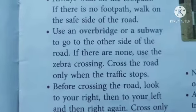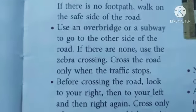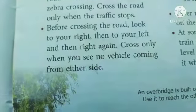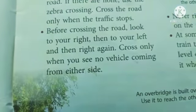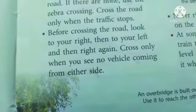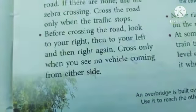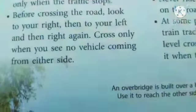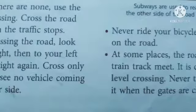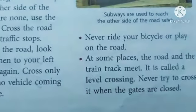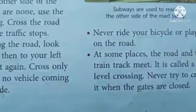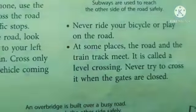Use an overbridge or a subway to go to the other side of the road. If there is none, use the zebra crossing and cross only when the traffic stops. Before crossing the road, look to your right, then to your left, and then right again. Cross only when you see no vehicle coming from either side. Never ride your bicycle or play on the road.